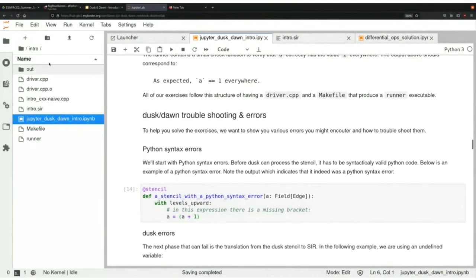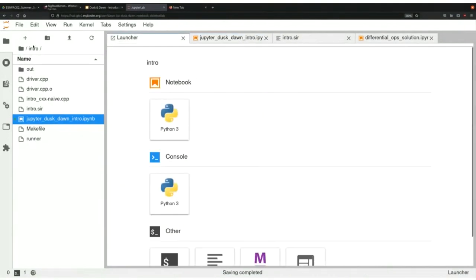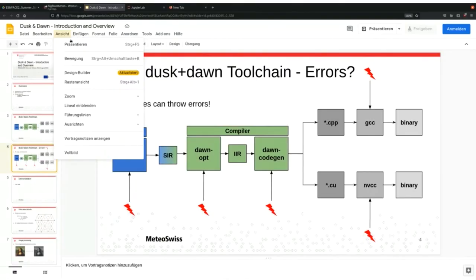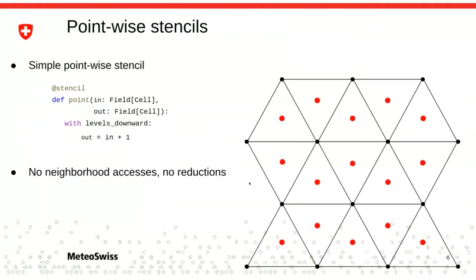Let's go back to the presentation and prepare the next notebook. Next we will do some simple pointwise stencil examples. A very simple pointwise stencil has an input field defined on cells — the red dots represent that for every cell we have exactly one value — and the output field is also on cells. We don't interact with our neighbors, we just do local computations. The output field equals the input field plus one — every number gets increased by one.